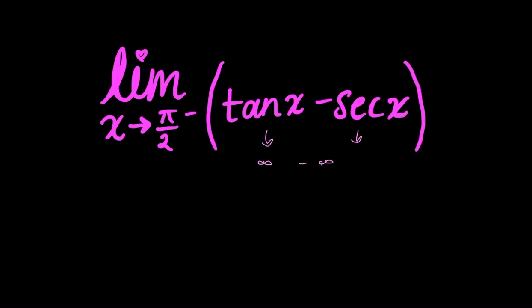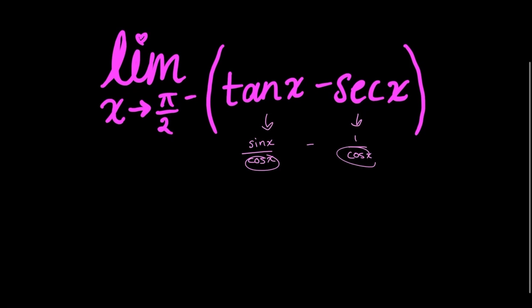In our case, this is pretty easy because these are just two trig functions, and we can rewrite this in terms of sines and cosines. So tan x equals sine x over cosine x, while secant x equals 1 over cosine x. I can immediately see I have a common denominator, so I can condense this into one fraction. Rewriting my limit as x approaches pi over 2 from the left is sine x minus 1 over cosine x.